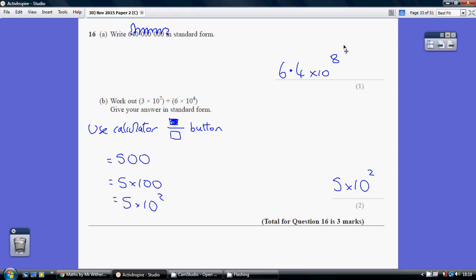So 8 hops, so 6.4 times 10 to the 8. Remember, it's a positive power when we have big numbers.